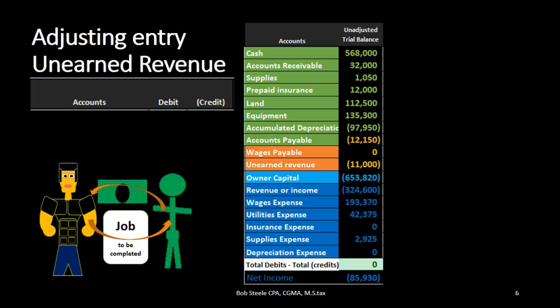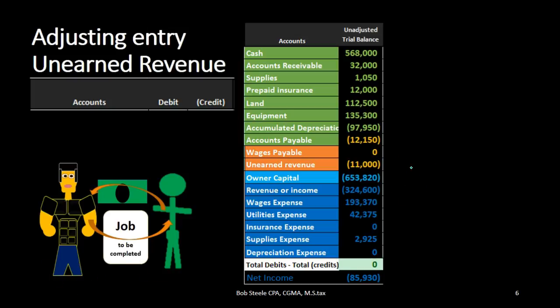For example, all adjusting entries will be as of the end of the time period — the end of the month or the end of the year. In this case we have the unearned revenue. We know that all adjusting entries for the most part will have an account above the owner's capital, meaning a balance sheet account.